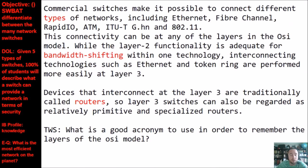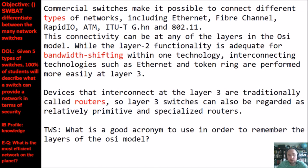Commercial switches make it possible to connect different types of networks — Ethernet, Fiber Channel, RapidIO, ATM, and the popular 802.11 Wi-Fi networks. This connectivity can be at any of the layers in the OSI model. While Layer 2 functionality is adequate for bandwidth shifting within one technology, interconnecting technologies such as Ethernet and Token Ring is performed more easily at Layer 3. Devices that interconnect at Layer 3 are traditionally called routers, so Layer 3 switches can also be regarded as relatively primitive and specialized routers.